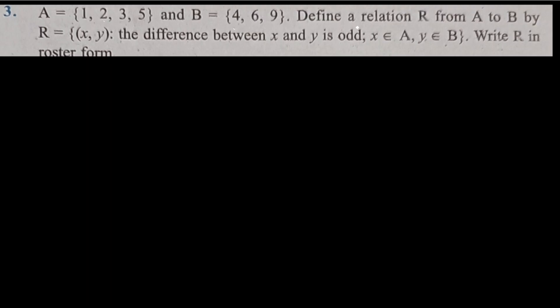Question 3: Two sets A and B are given. We have to define a relation from A to B as {(x, y) such that the difference between x and y is odd}. The relationship concerns the difference, so we need to find all ordered pairs where x − y is an odd number.